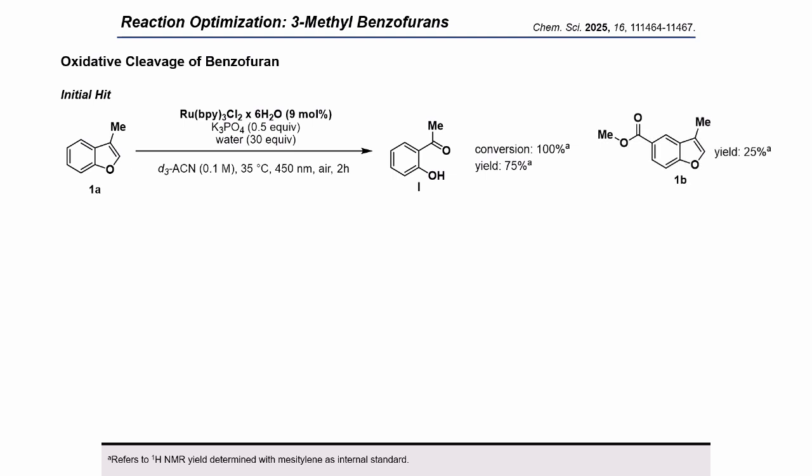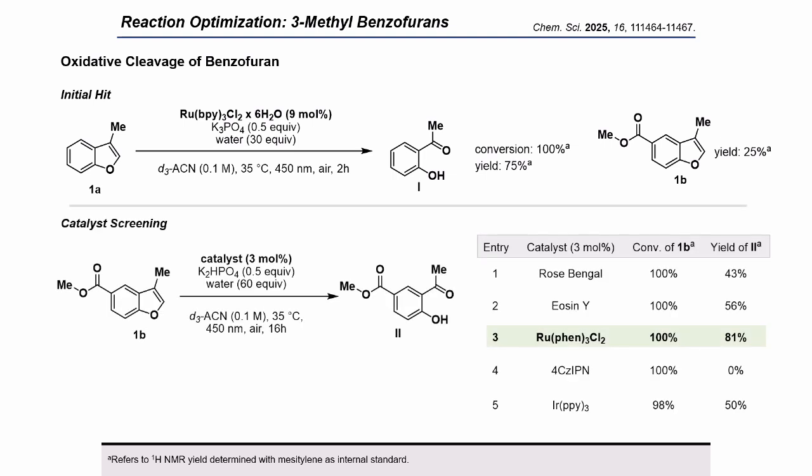However, when we tried these conditions with a more complex 5,3-disubstituted benzofurin, we observed a drop in yield. Thus, we started screening different photoactive species. Photosensitizers such as Rose Bengal and Eosin Y should be able to generate singlet oxygen to engage in the oxidative C2-C3 cleavage, giving the desired cleaved product in yields of around 50%. We tried different photocatalysts such as cyanoarene-based donor-acceptor or an iridium-based photocatalyst; however, they didn't perform better. In the end, changing the ligand of the ruthenium catalyst from bipyridine to 1,10-phenanthroline did the trick, giving the cleaved product in 81% yield.